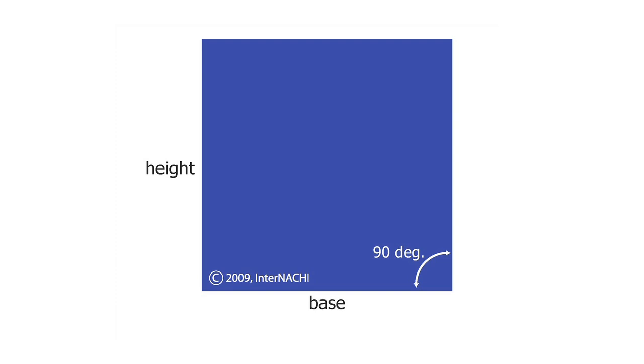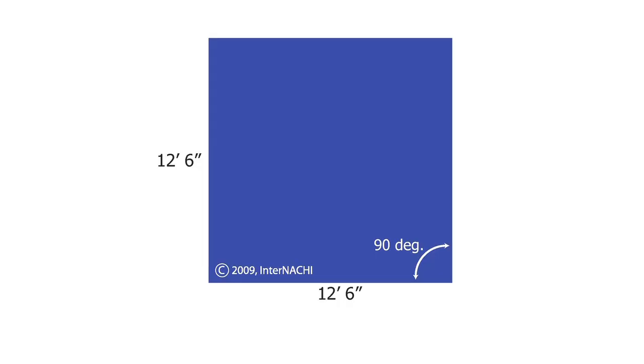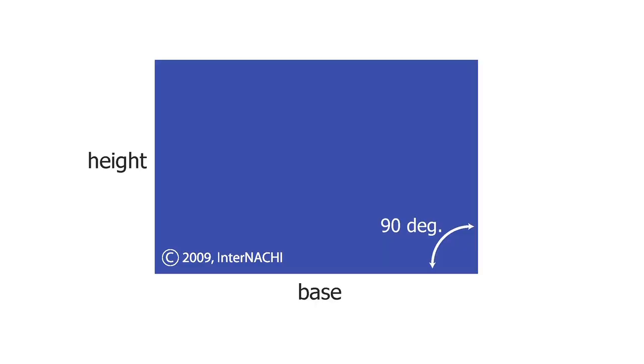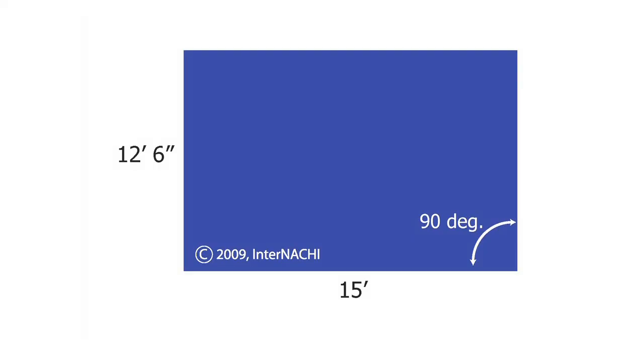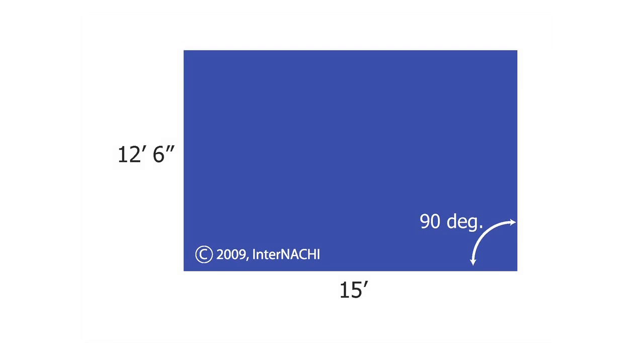This is a square. The area of a square is simply base times height. In this example, the base is twelve and a half, and the height is twelve and a half. This is a rectangle. The area of a rectangle is just like a square — base times height. In this example, the base is fifteen feet and the height is twelve and a half, so the area of the rectangle is fifteen times twelve and a half, which equals one hundred and eighty-seven and a half square feet.